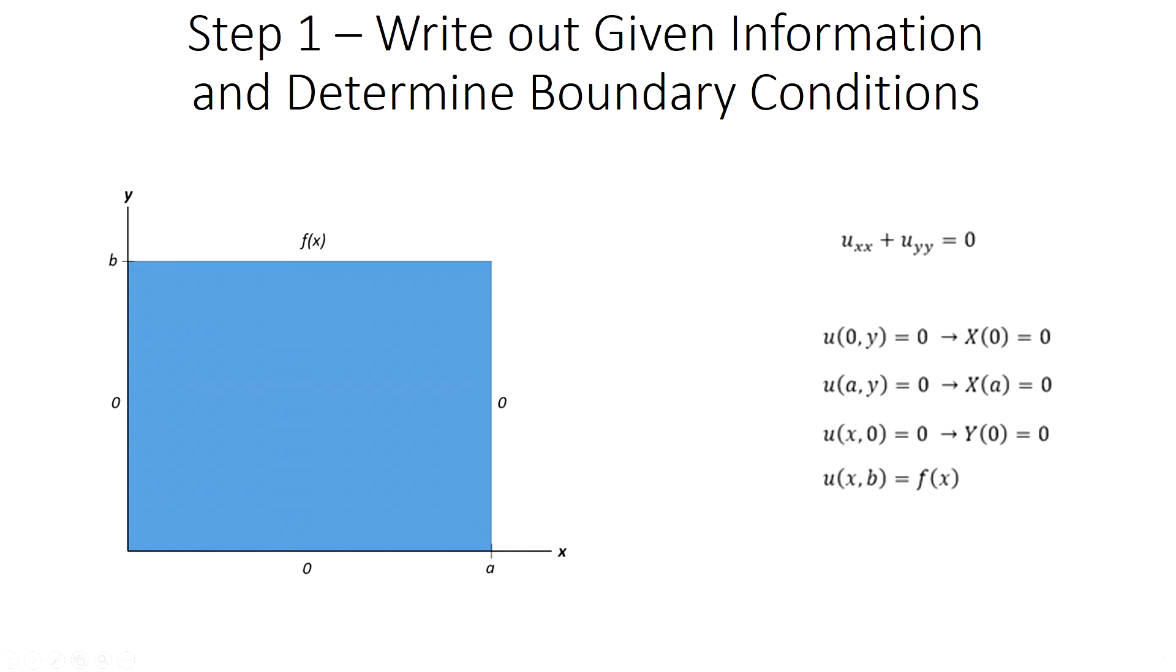The first step for any PDE is to identify what the boundary and initial conditions are indicating should be happening in the final solution. A boundary condition is any point at which the dependent variable is specified. For this case, the PDE is analyzed on a rectangular section at which three of the four sides have a value of zero. The fourth side has a value of f of x across the edge, which is any function that is non-zero.